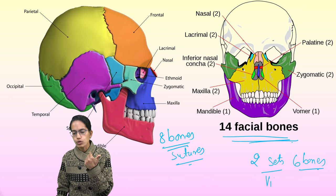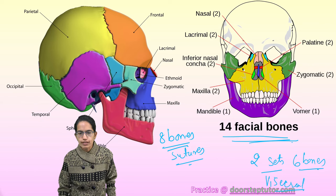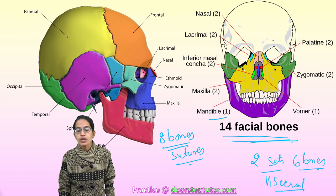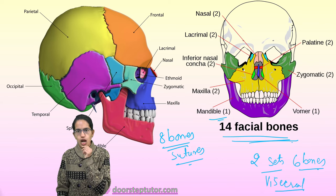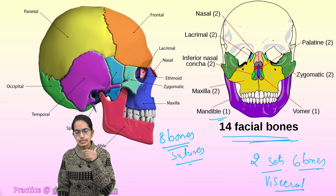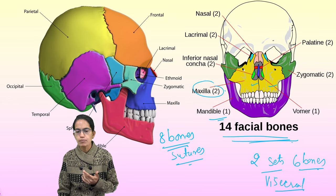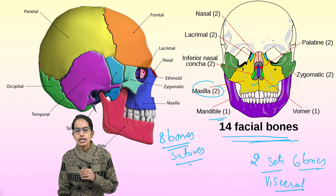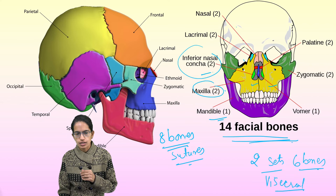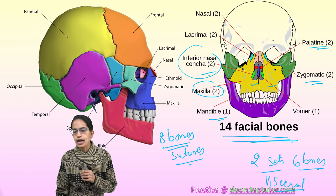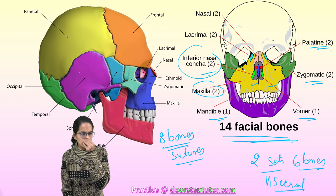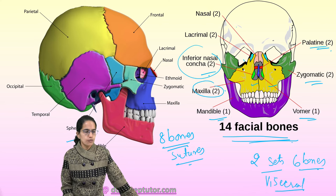The hyoid bone is at the base of the tongue and is also known as the visceral bone. The 14 facial bones include the mandible, which is the lower jaw and the only movable jaw bone; the maxilla, which is the upper jaw — two in number but not movable; and lacrimal bones, nasal bones, inferior nasal concha, zygomatic bone, palatine, and vomer bones.